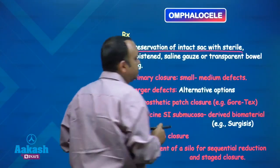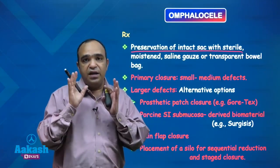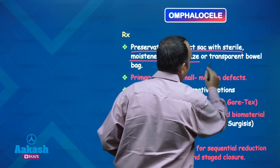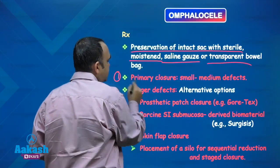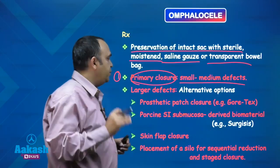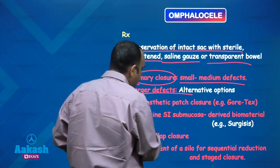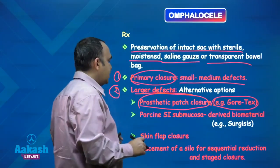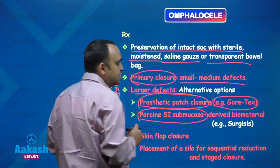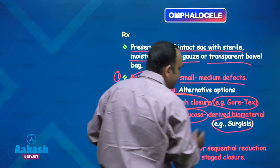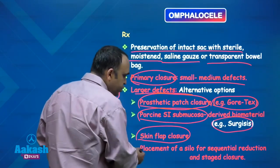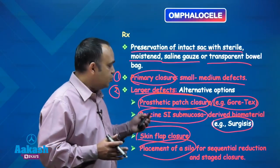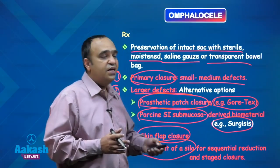Management of omphalocele is more or less similar to gastroschisis with a few additional methods. First, preserve the sac — never open it, as it protects the bowel. Keep it moistened with saline gauze or a transparent bowel bag. If the defect is small or medium, primary closure is performed. If the defect is large, prosthetic patch repair with a PTFE Gore-Tex patch is used, or porcine submucosal-derived biomaterial like Surgisis. We can also do a skin flap closure, or placement of a silo if the defect is too large for direct reduction — followed by staged fascial closure.